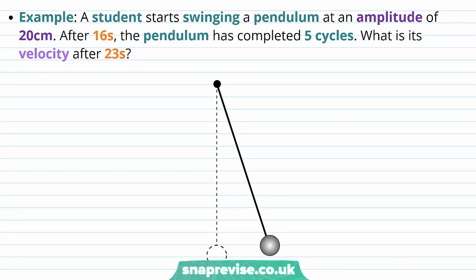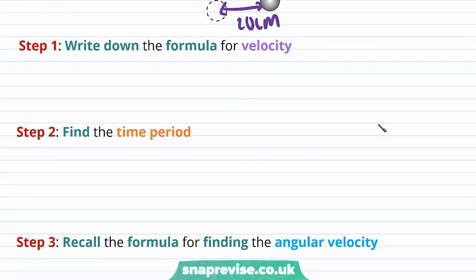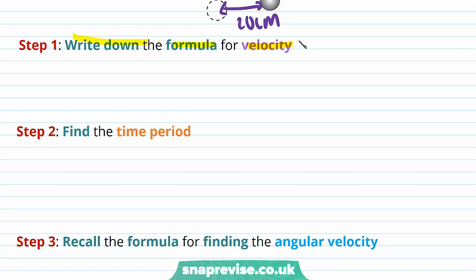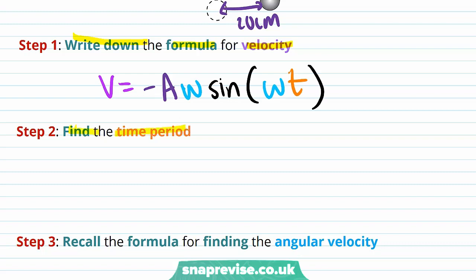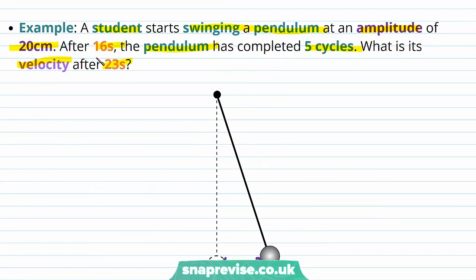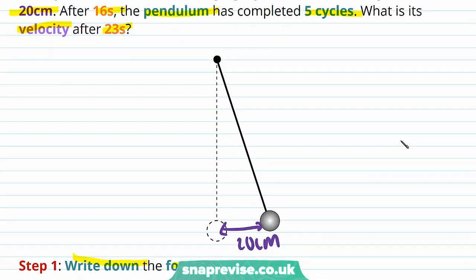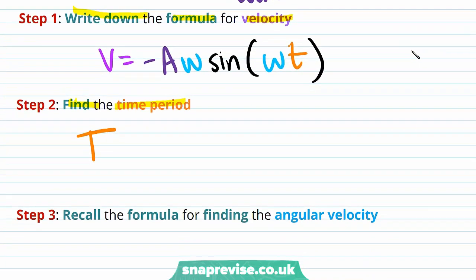Let's do an example. A student starts swinging a pendulum at an amplitude of 20 centimeters. After 16 seconds, the pendulum has completed 5 cycles. What is its velocity after 23 seconds? Step 1: write down the formula for velocity — v equals minus A times omega times sine of omega t. We next need to find the time period T. Since the pendulum completes 5 cycles in 16 seconds, we divide 16 by 5, which equals 3.2 seconds.